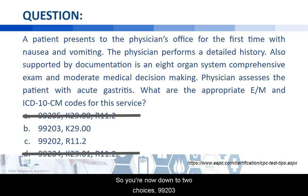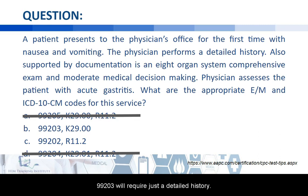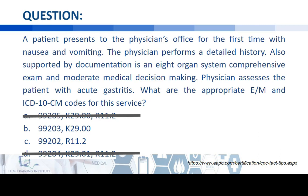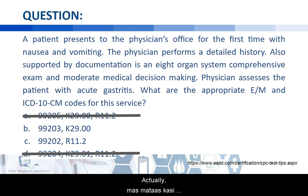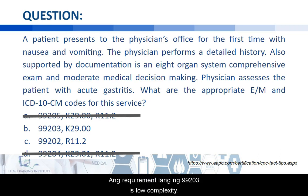You're now down to two choices: 99203 or 99202. For 99203, the requirement is just a detailed history, a detailed exam, and low-complexity medical decision-making. The level of history is met. The exam is met — in fact the comprehensive exam performed exceeds the requirement. And medical decision-making is also met: 99203 only requires low complexity, but what you have here is moderate.